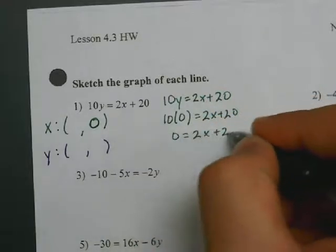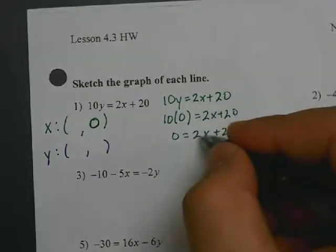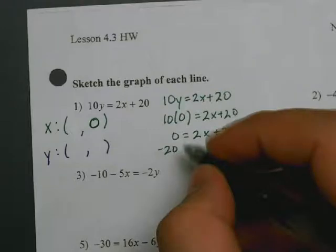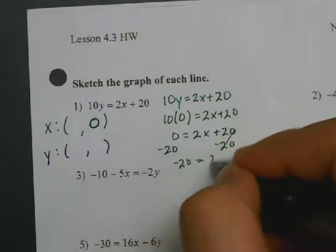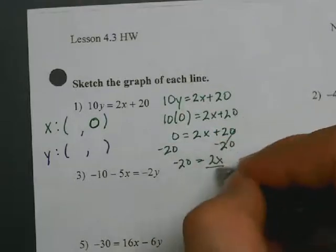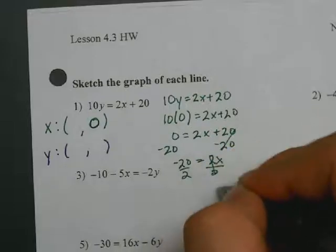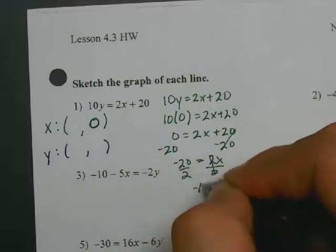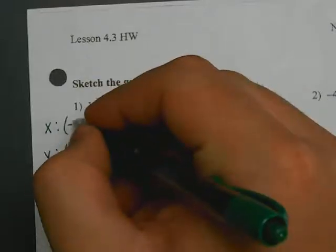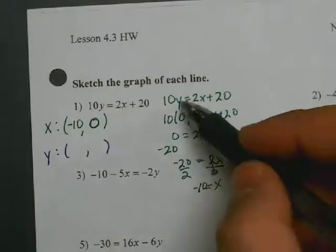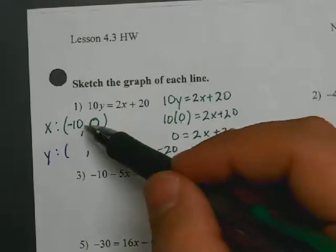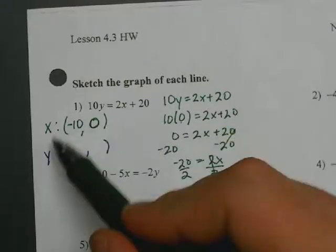So 10 times 0 is 0, equals 2x plus 20. I'm going to subtract 20 from both sides, which cancels, leaving me with negative 20 equals 2x. Then I divide both sides by 2 and get x equals negative 10. So my x coordinate is negative 10. When y is 0, x is negative 10, creating the coordinate point negative 10 comma 0 — also known as the x intercept.